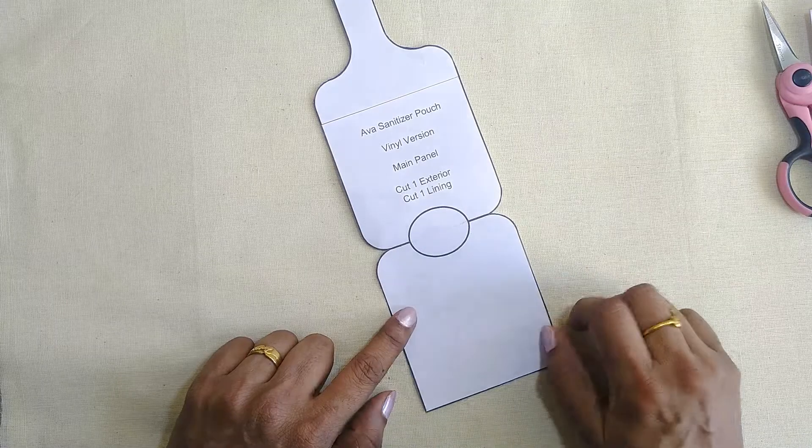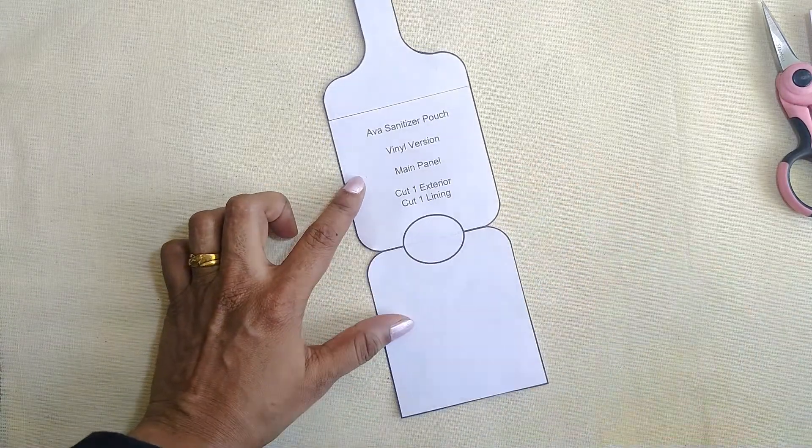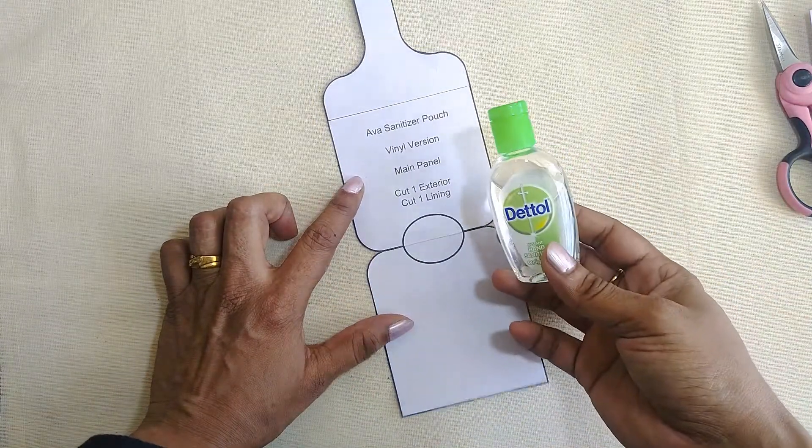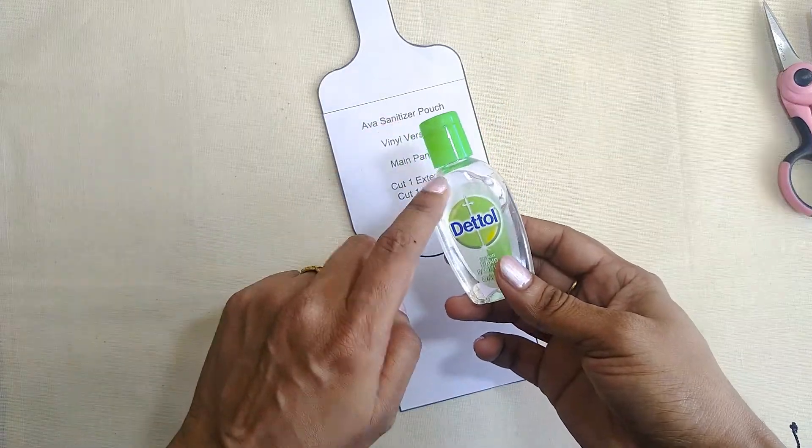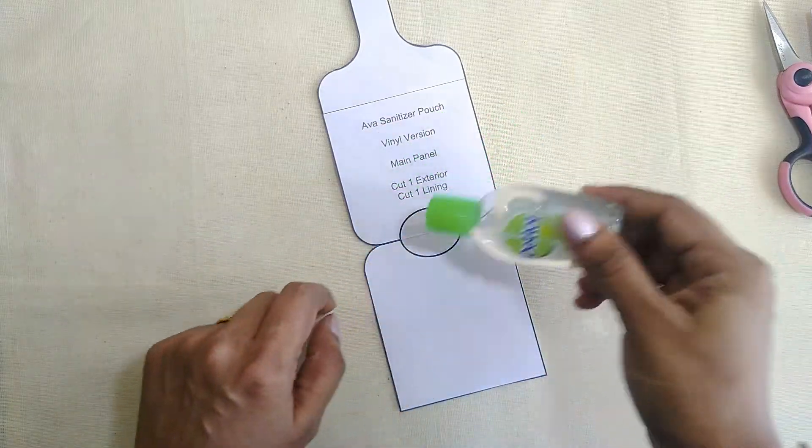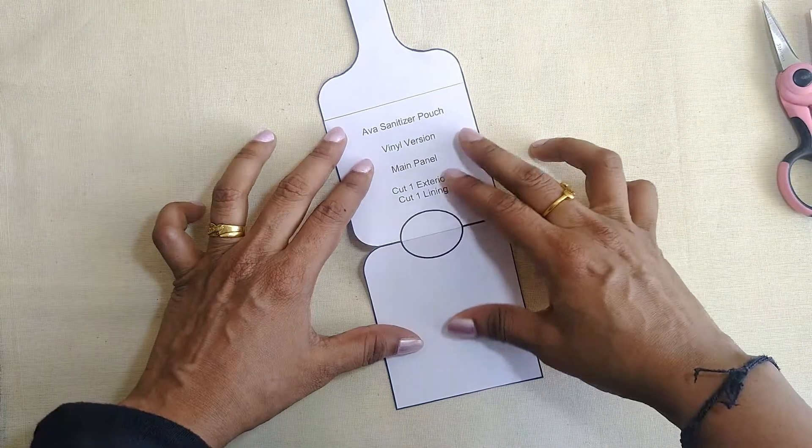You'll find the small circular portion over here. That is the hole for the neck or the nozzle of your sanitizer bottle.